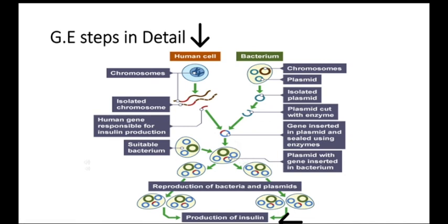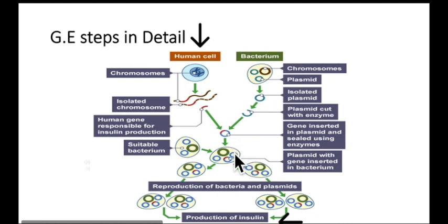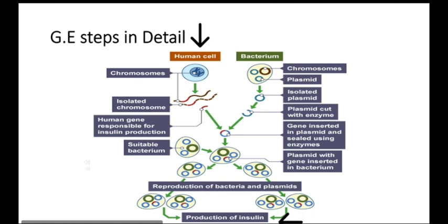Using ligase enzyme, the human insulin gene is joined with the bacterial plasmid. The ring of DNA in the plasmid is cut using the same restriction enzyme used for cutting the human DNA, so the sticky ends are complementary to those on the human DNA. The result is a recombinant plasmid — containing a combination of bacterial and human DNA. In the expression step, the genetically modified plasmids are added to a culture of bacteria, some of which take up the plasmid into their cells. These bacteria are put into a fermenter.